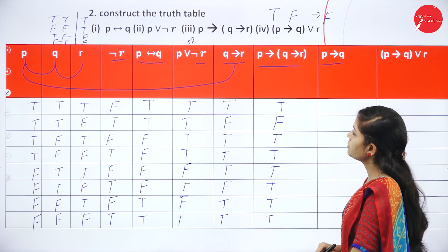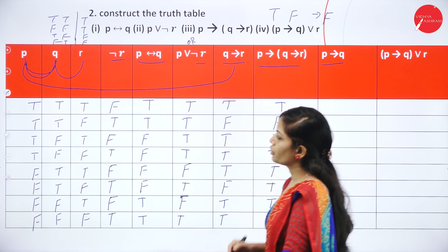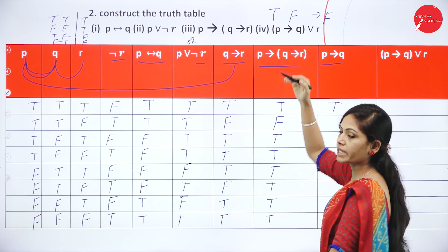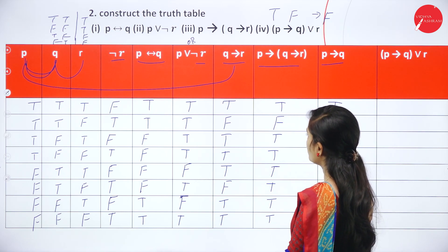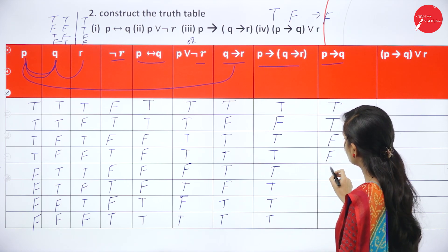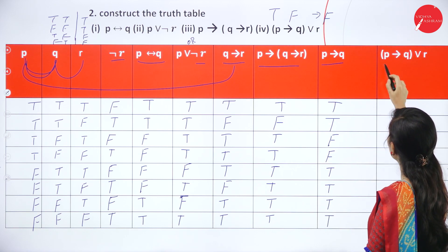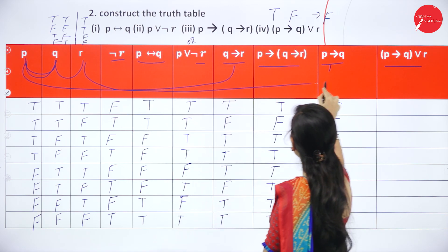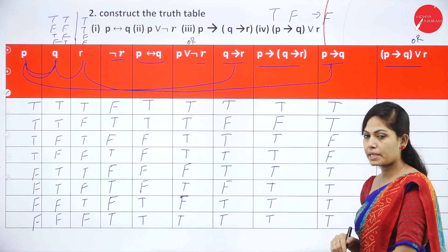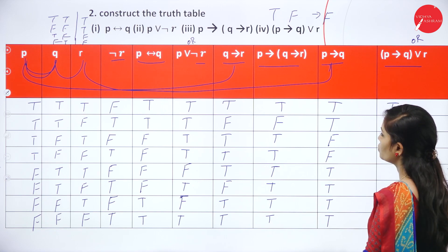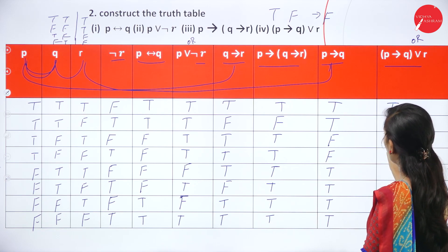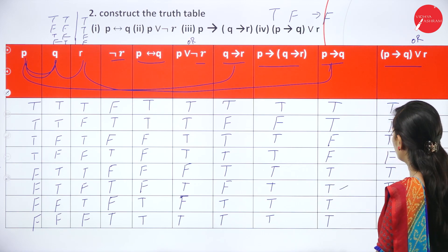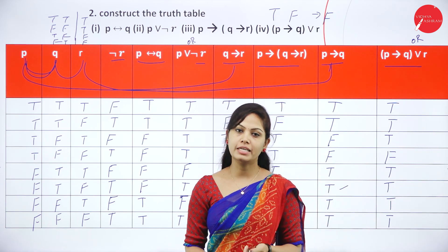Next find P → Q using the P and Q columns with implication. All conditions are true except true → false. Then find (P → Q) ∨ R using the P → Q column and R column with OR operation. If any one condition is true, all conditions in that row are true. This is the method for constructing the truth table — I have explained all the steps.